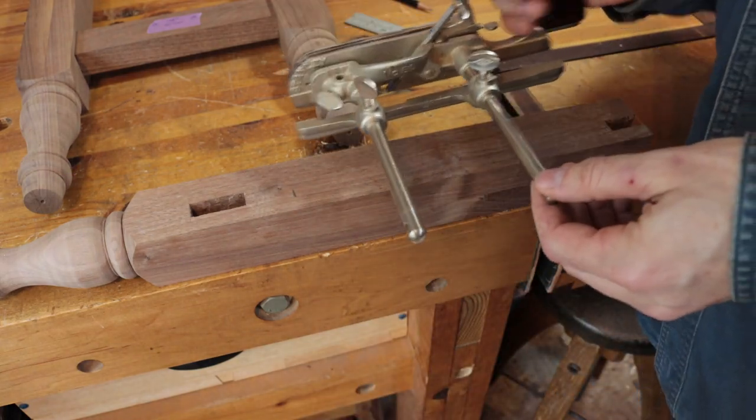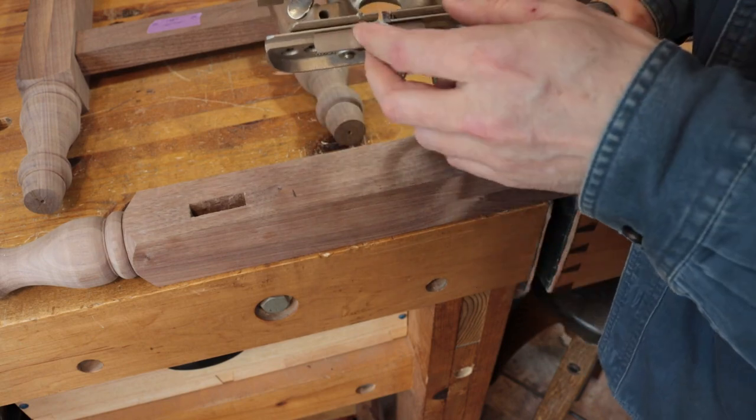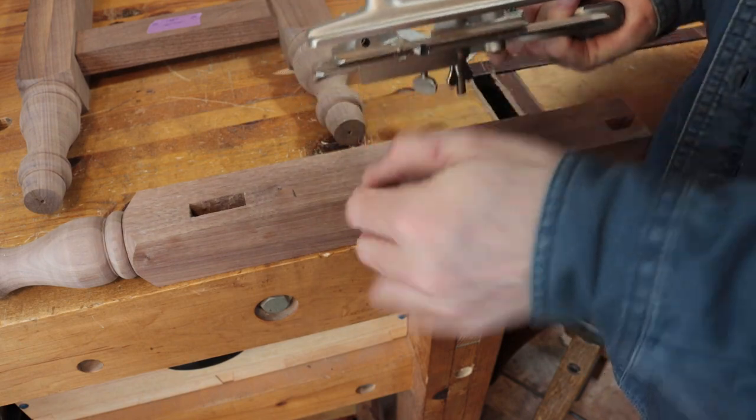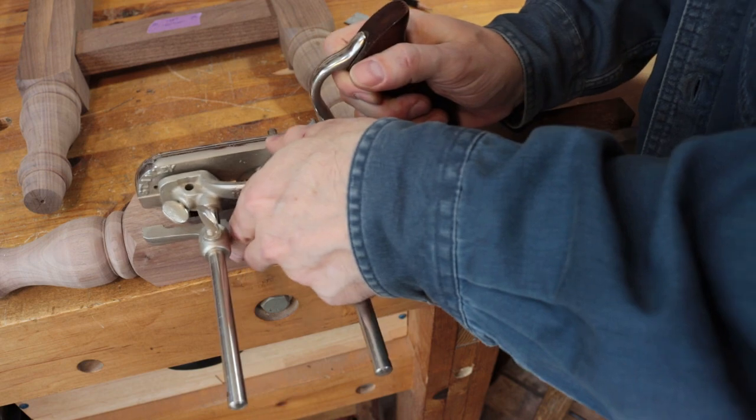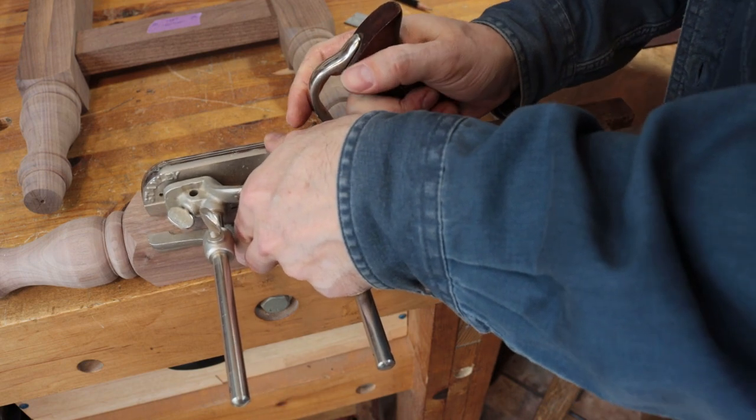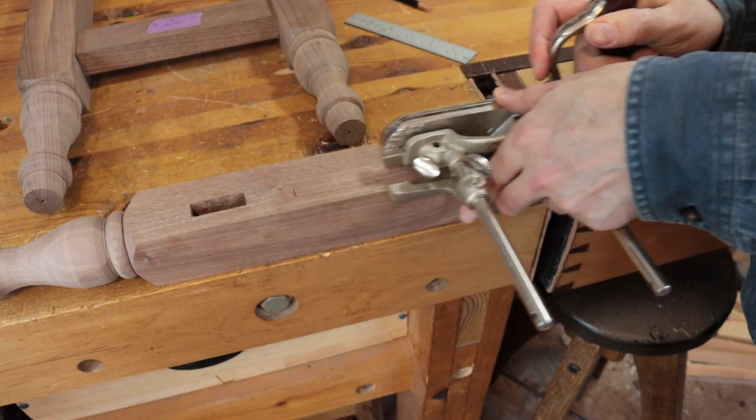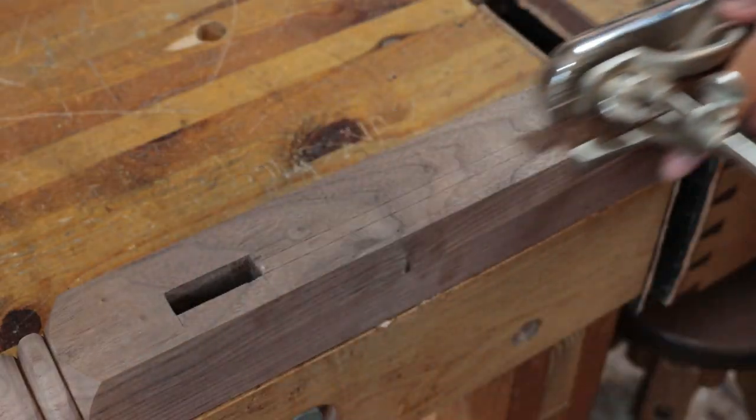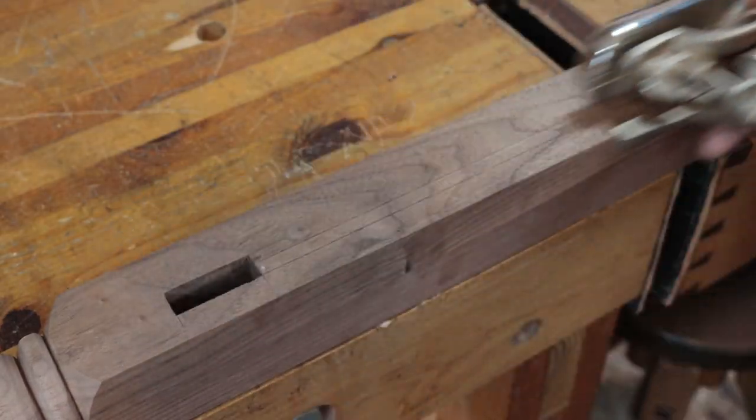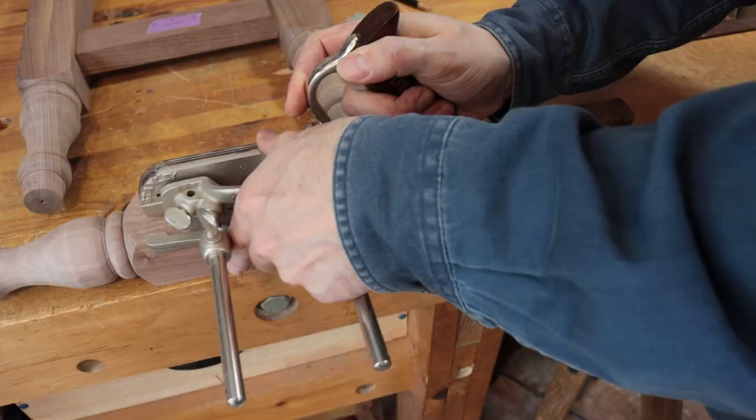Now I take my combination plane, and I already have installed the two spurs which are going to cut lines on either side of the dado that I want to make. I hold it at the bottom mortise and I draw it back so that I can cut those lines.